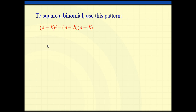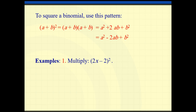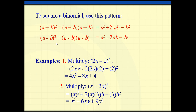Here we have another identity: (a+b)² and (a−b)². For (a+b)², it equals a² plus 2ab plus b². For (a−b)², it equals a² minus 2ab plus b². Example: (2x−2)² — here a is 2x, so (2x)² = 4x², then 2 times 2x times 2 = 8, giving 4x² minus 8x plus 4. For (x+3y)²: x² plus 2 times x times 3y equals 6xy, plus 9y². Please memorize these identities — we'll use them a lot in this chapter.